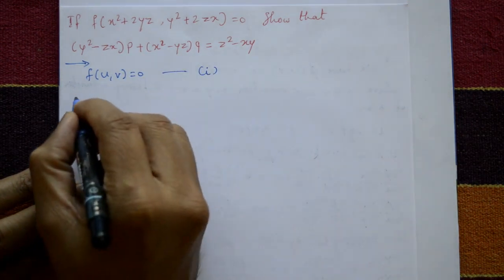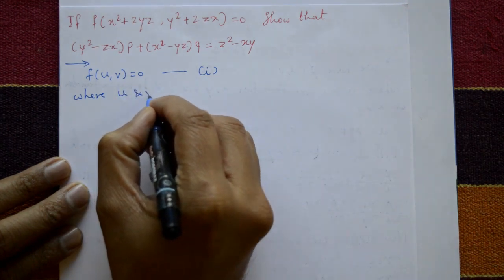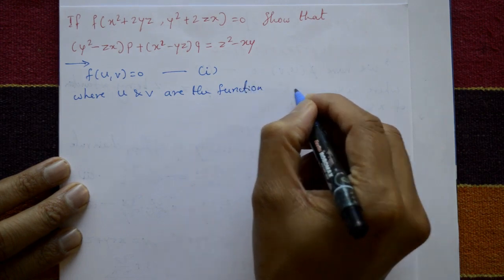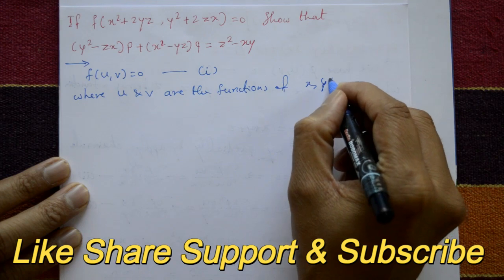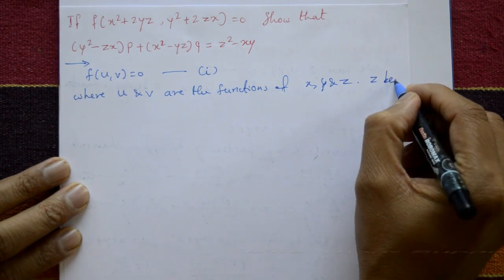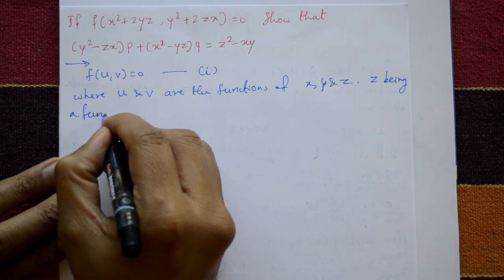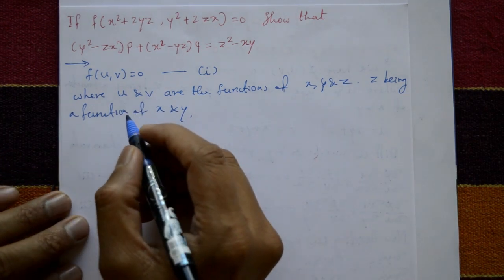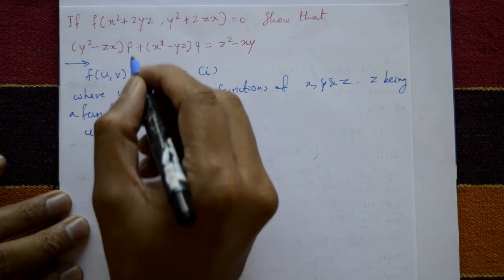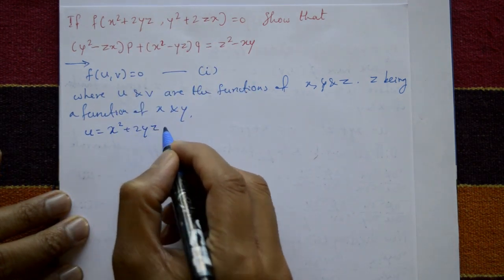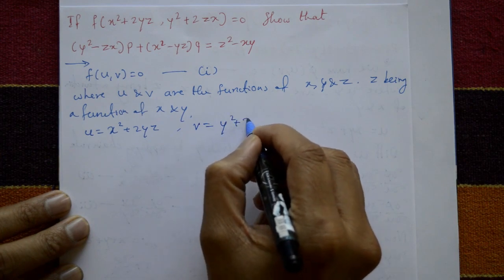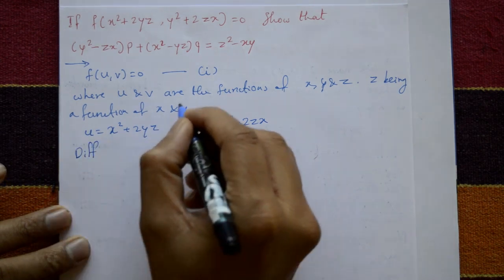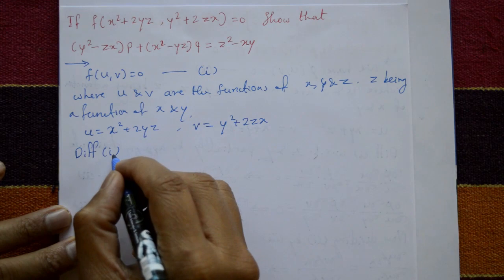Let f(u, v) = 0 — call this equation number one. Here u and v are functions of x, y, and z, with z being a function of x and y only. Let u = x² + 2yz and φ = y² + 2zx.